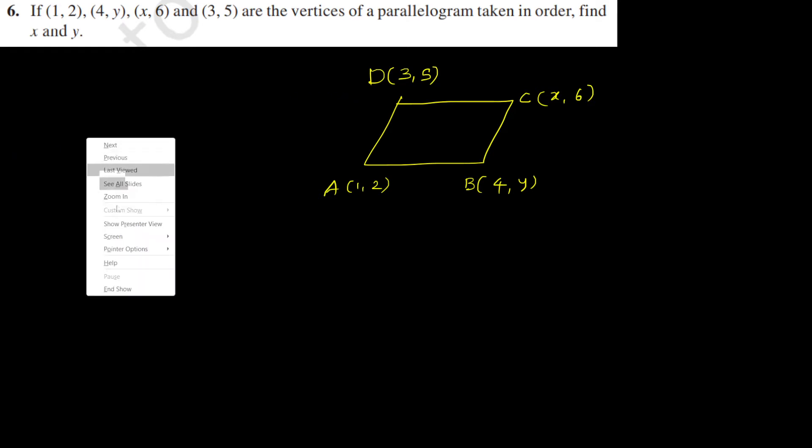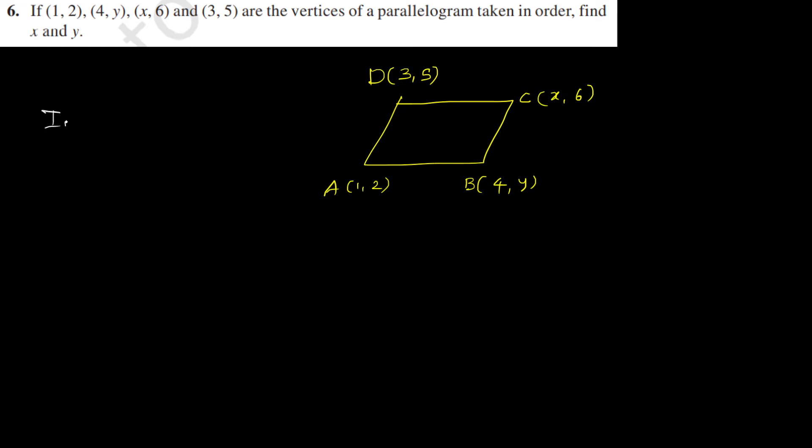Vertices of parallelogram means a very important thing we have to take: in a parallelogram, diagonals bisect each other. That means the midpoint of AC and midpoint of BD are one and the same. Therefore, midpoint of AC should be equal to midpoint of BD.